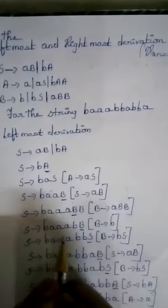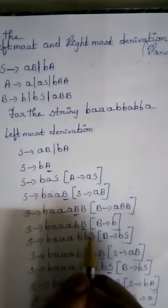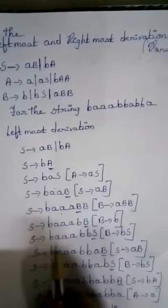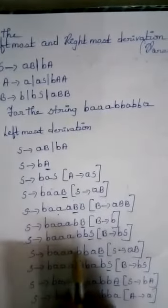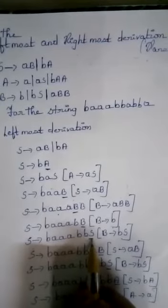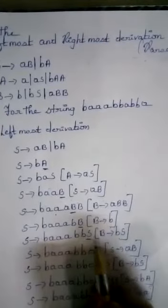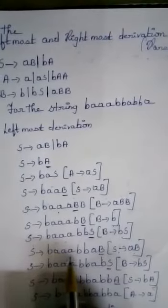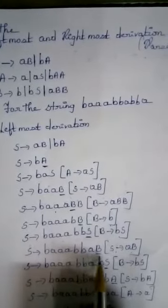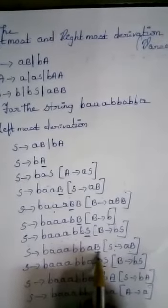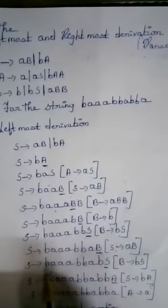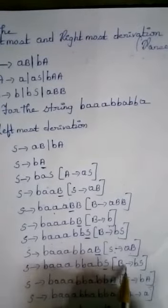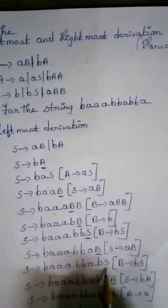Then S turns to BAABB because B turns to ABB. Then S turns to BAABB and S. Here we are considering this S, and this S turns to AB, then S turns to BAAA BBBB and AB. Next we are considering this B. S turns to BAAA BBBB and A, B and S, because B turns to BS. Next we are considering this S.